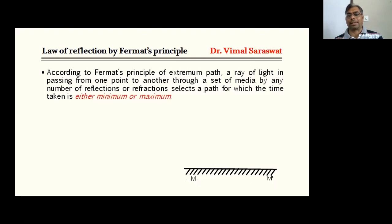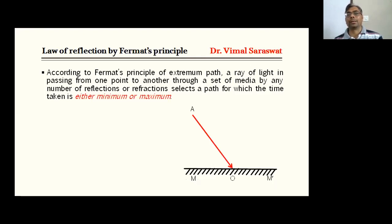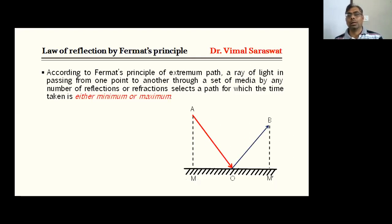Here MM' is our reflecting surface. A ray is incident on this reflecting surface and this incident ray is represented by AO. This ray is reflected by the surface and follows the path OB, so AO is our incident ray and OB is our reflected ray. We draw perpendiculars on MM' from points A and B respectively; these perpendiculars are AM and BM', where AM is equal to a and BM' is equal to b.